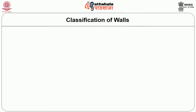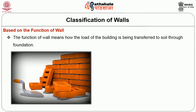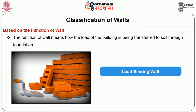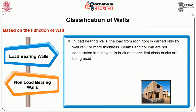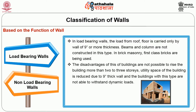First we will see classification based on the function of the wall — meaning how the load of the building is transferred to the soil through the foundation. There are two types: load-bearing wall and non-load-bearing wall. In load-bearing walls, the load from roof and floor is carried only by the wall, which is 9 inches or more in thickness. Beams and columns are not constructed in this type. In brick masonry, first-class bricks are used. The disadvantages are: it is not possible to raise the building more than 2 to 3 stories, the utility space is reduced due to the 9-inch thick wall, and the building is not able to withstand dynamic loads.